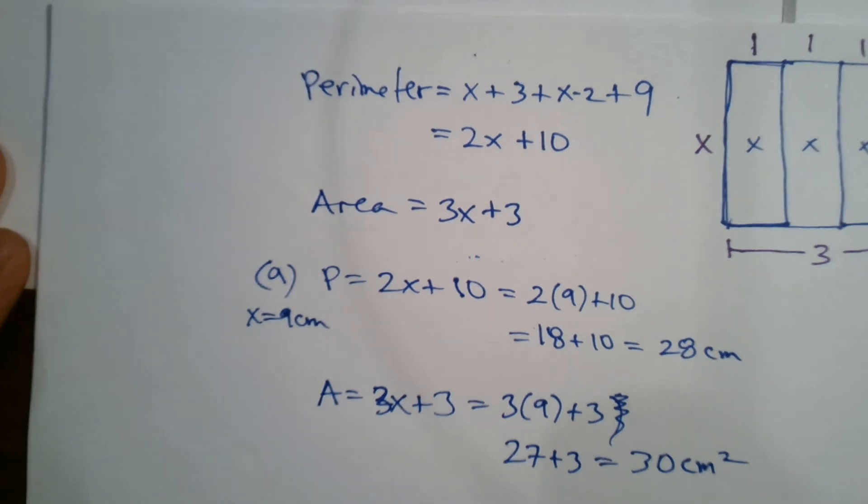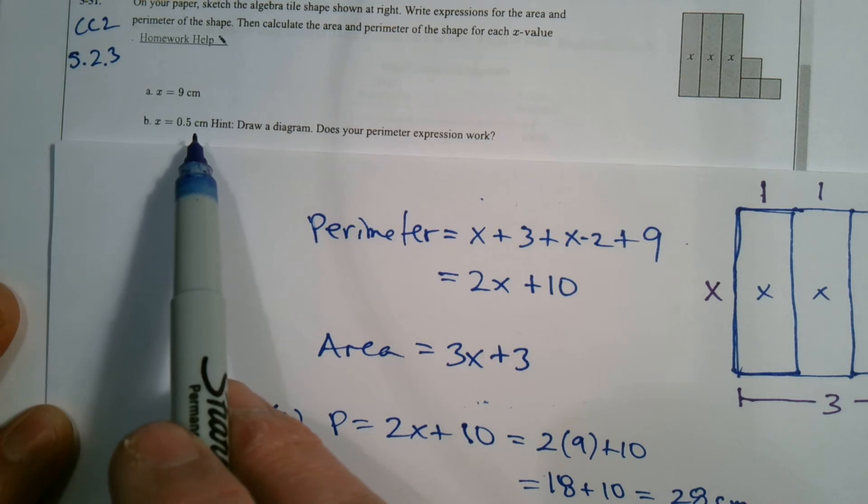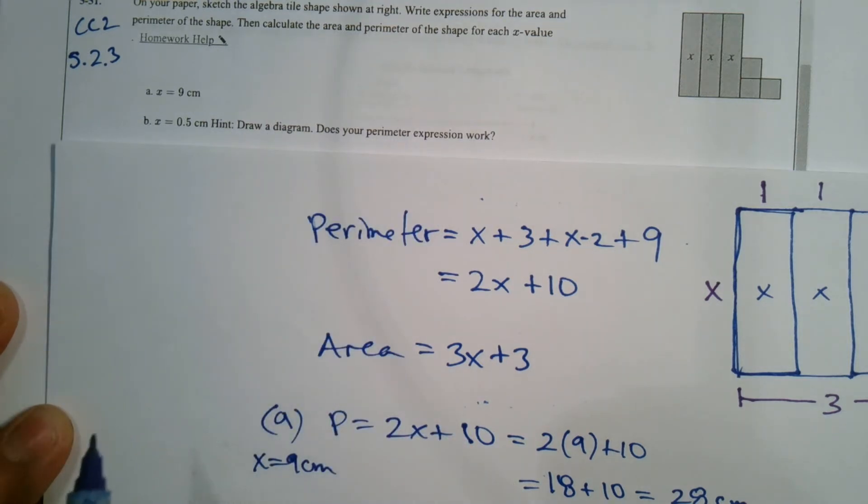So B says X equals five-tenths centimeter, and it says hint, draw a diagram. Does your perimeter expression work?